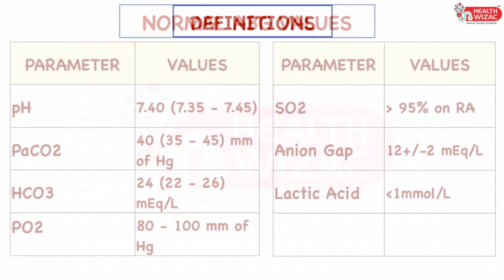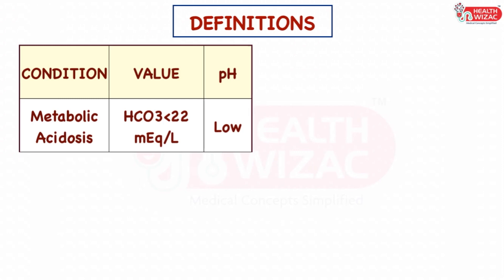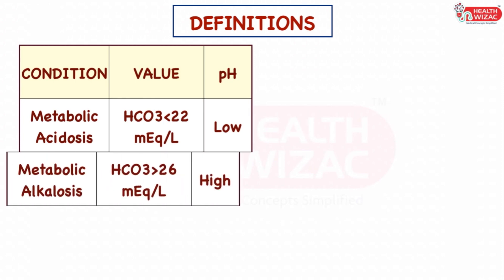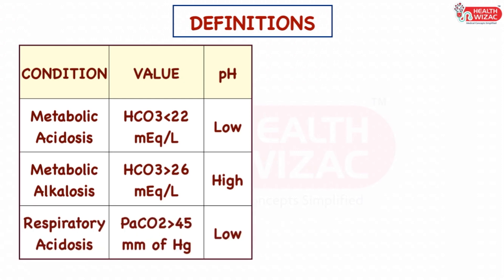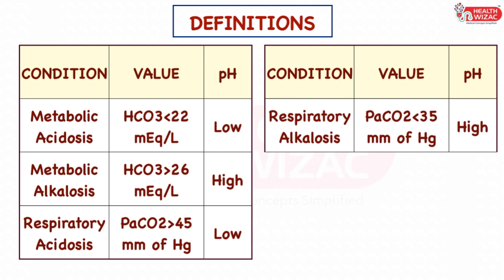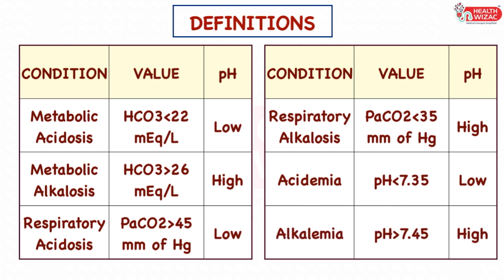Metabolic acidosis is a condition in which pH is less than 7.35 and bicarbonate is less than 22 mEq/L. Metabolic alkalosis is a condition in which pH is more than 7.45 and bicarbonate is more than 26 mEq/L. Respiratory acidosis is a condition in which pH is less than 7.35 and PaCO2 is more than 45 mmHg. Respiratory alkalosis is a condition in which pH is more than 7.45 and PaCO2 is less than 35 mmHg. Acidemia is pH less than 7.35 and alkalemia is pH more than 7.45.